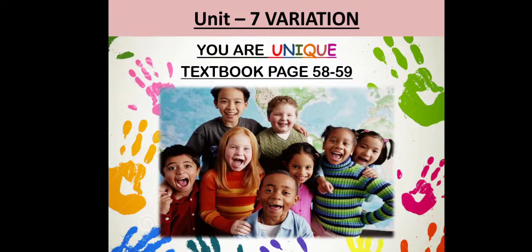My dear students, please open your science textbook, page number 58. This is your last lesson for Unit 7: Variation. In fact, this is the last lesson you will be learning in science in Level 1. This is a very interesting lesson — I'm sure you're going to enjoy it. I hope you have kept your textbook, page number 58, open.